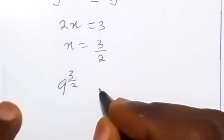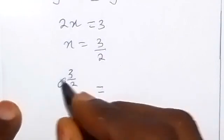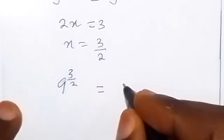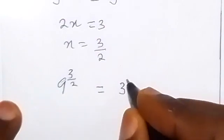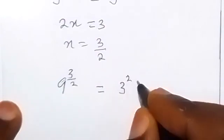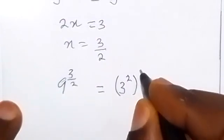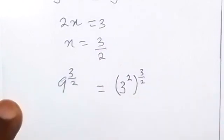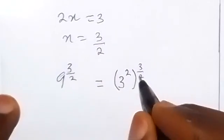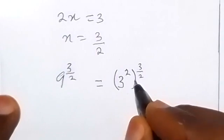And this of course we can write it again since 9 we can change to 3 raised to power 2, so 3 raised to power 2, then raised to power 3 over 2. And here now we can see that the powers multiply.